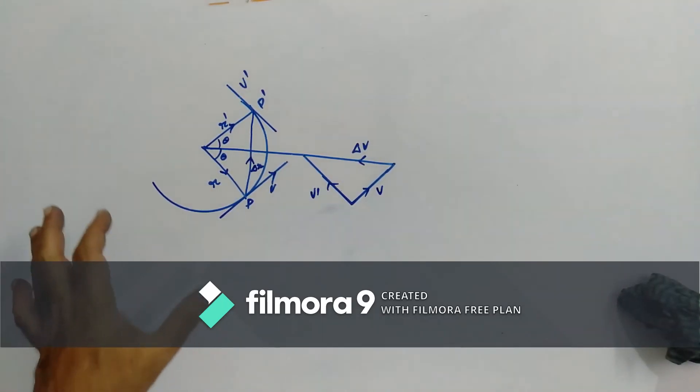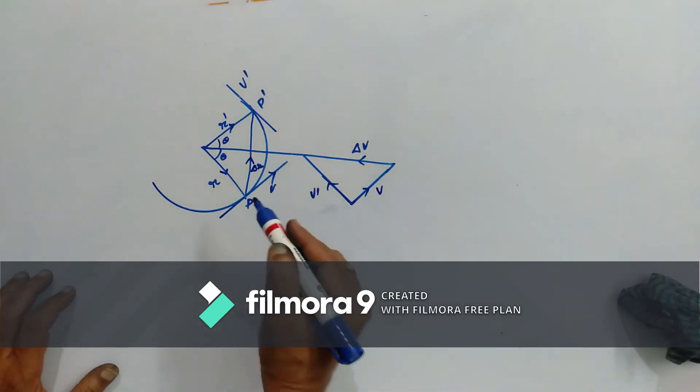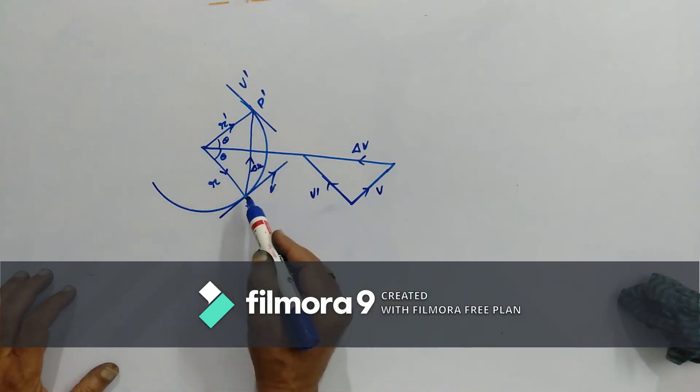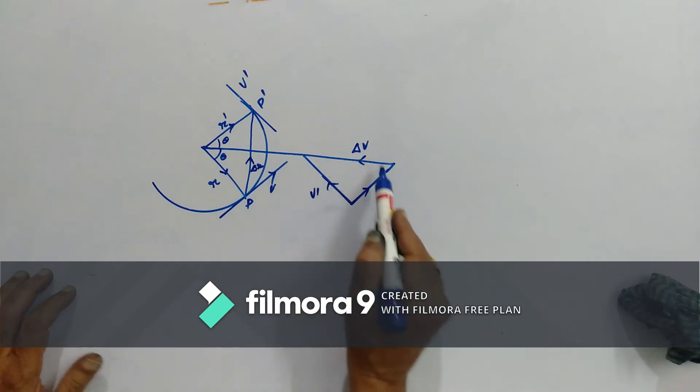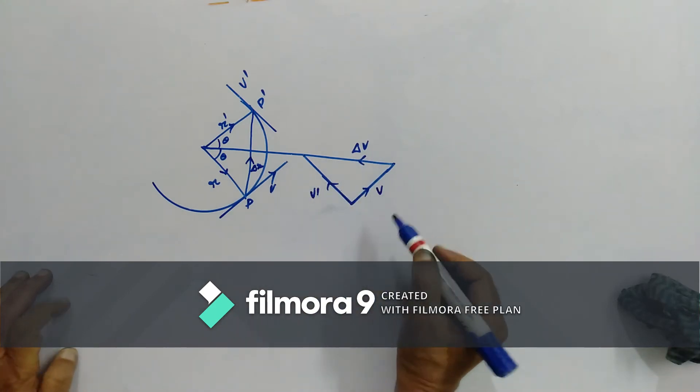Let's derive the formula for centripetal acceleration. We have already discussed three different cases. So, now here what we have with us is one triangle consisting of these R's. The other triangle consists of these velocity vectors.